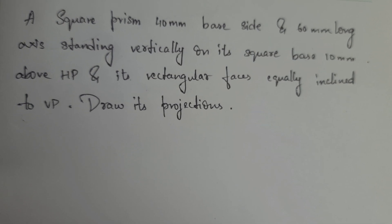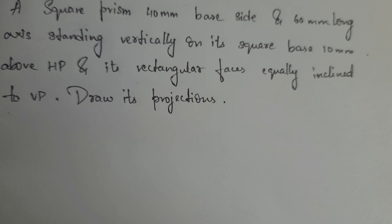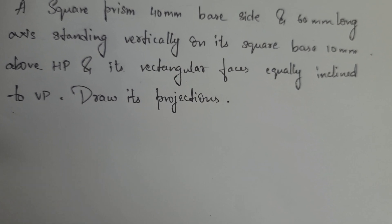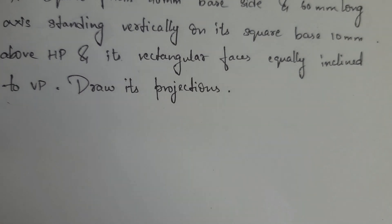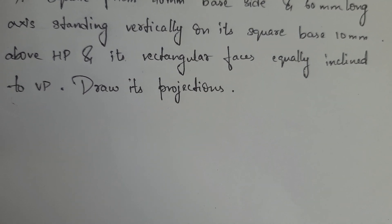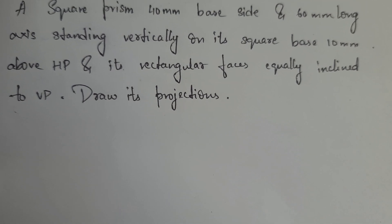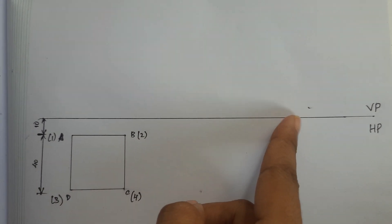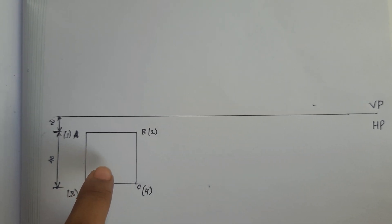This is a vertical angle. 10 mm height, 10 mm above HP. For HP, it is a little bit higher than 10 mm distance. For rectangular faces, it is inclined to VP. It is a little bit higher than VP plane.